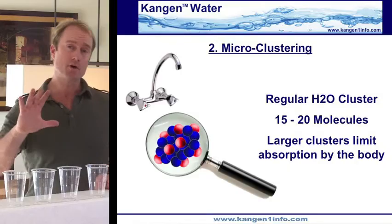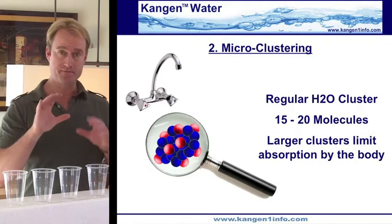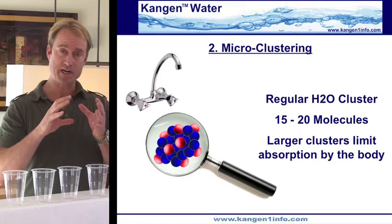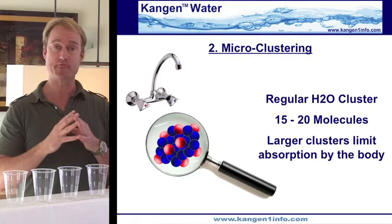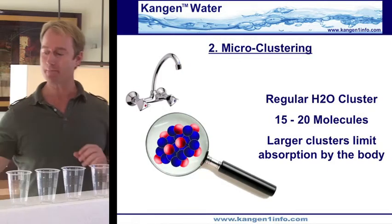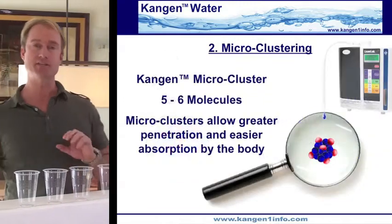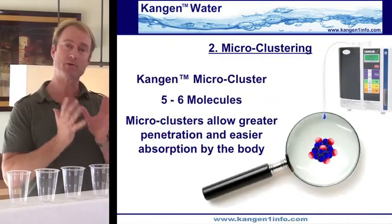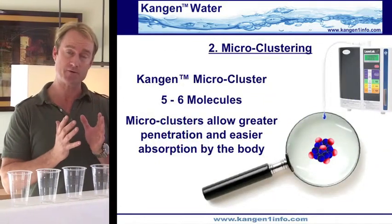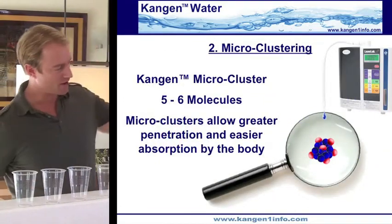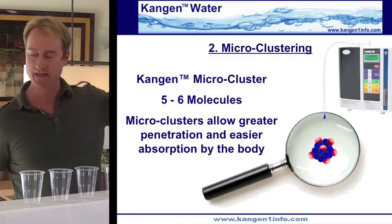Water molecules group in clusters of 15, 20, even 100 parts per cluster. The kangen machine is actually able to break these water molecule clusters down so that there are about 6 parts per cluster.